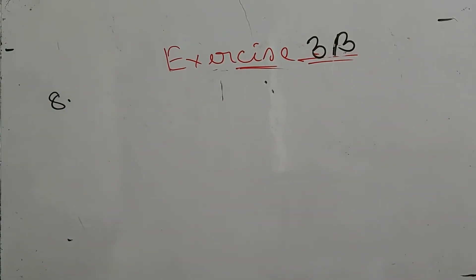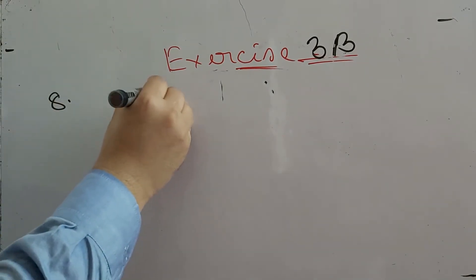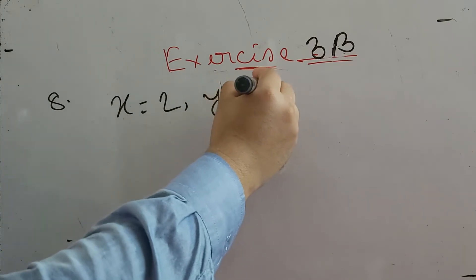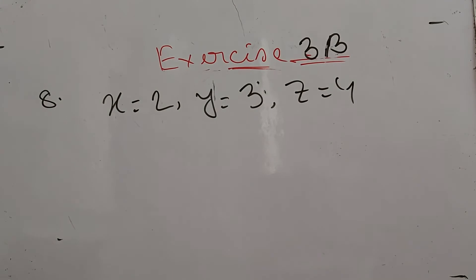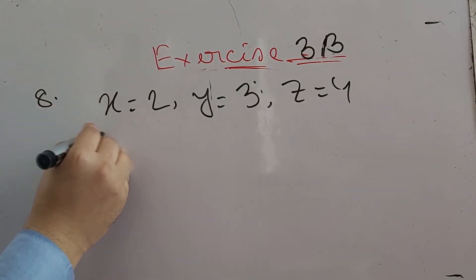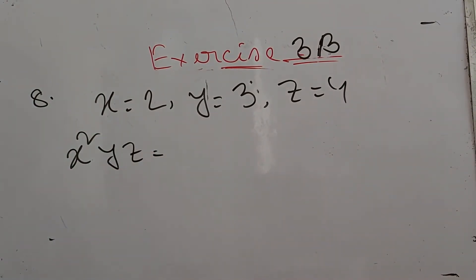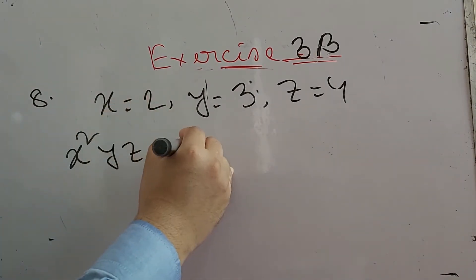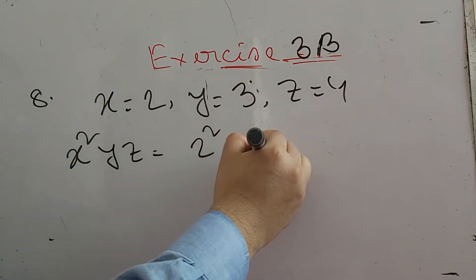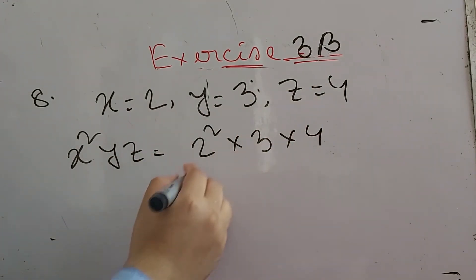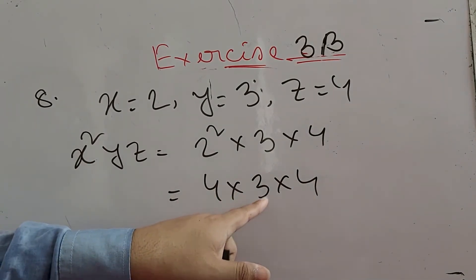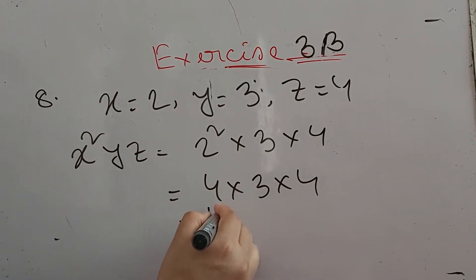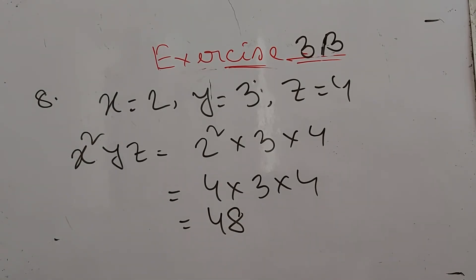Number eight says: find the value of x squared times y times z, when x equals two, y equals three, z equals four. Substituting: x squared means two squared which is four; y is three; z is four. So four into three into four — four times three is twelve, twelve times four is forty-eight. So forty-eight will be the answer of number eight.